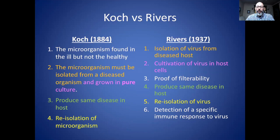Criterion four: you must take that isolated particle and put it into a healthy host and cause the same disease — the same as Koch's third postulate. This is the most important criterion for proving causation. You can't say it causes disease without this step, because before that, even if you find it in people with the disease, it's just an association or correlation. For example, if you show up at a fire and see firefighters, you can't assume the firefighters caused the fire — they're just associated with it and are actually doing the opposite.